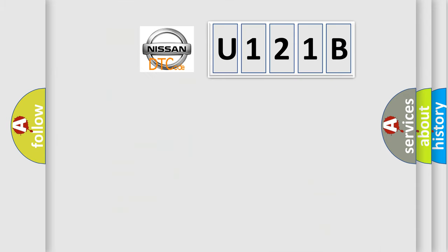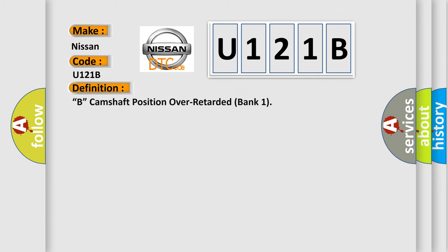The number itself does not make sense to us if we cannot assign information about what it actually expresses. So, what does the diagnostic trouble code U121B interpret specifically for Nissan car manufacturers? The basic definition is camshaft position over retarded bank one.